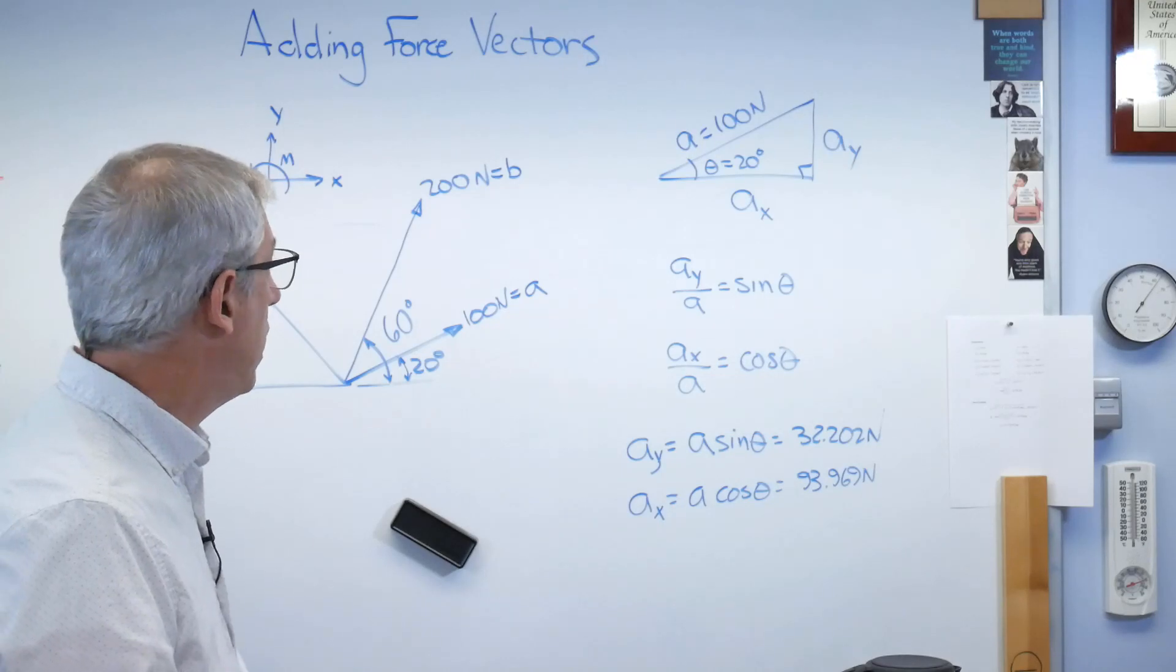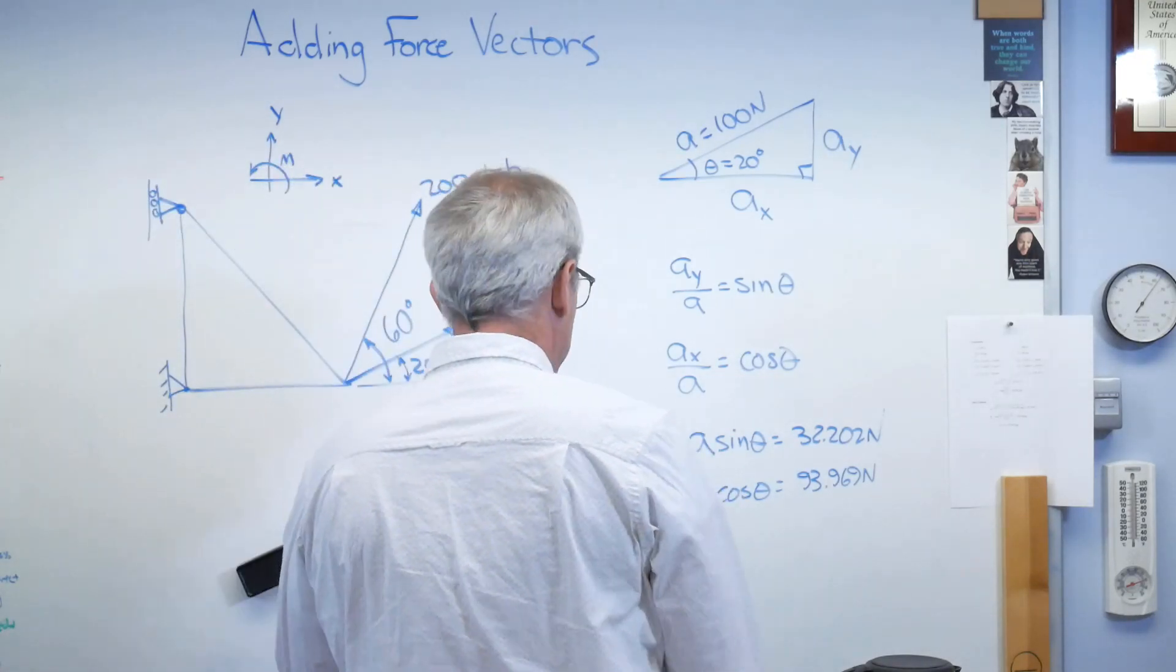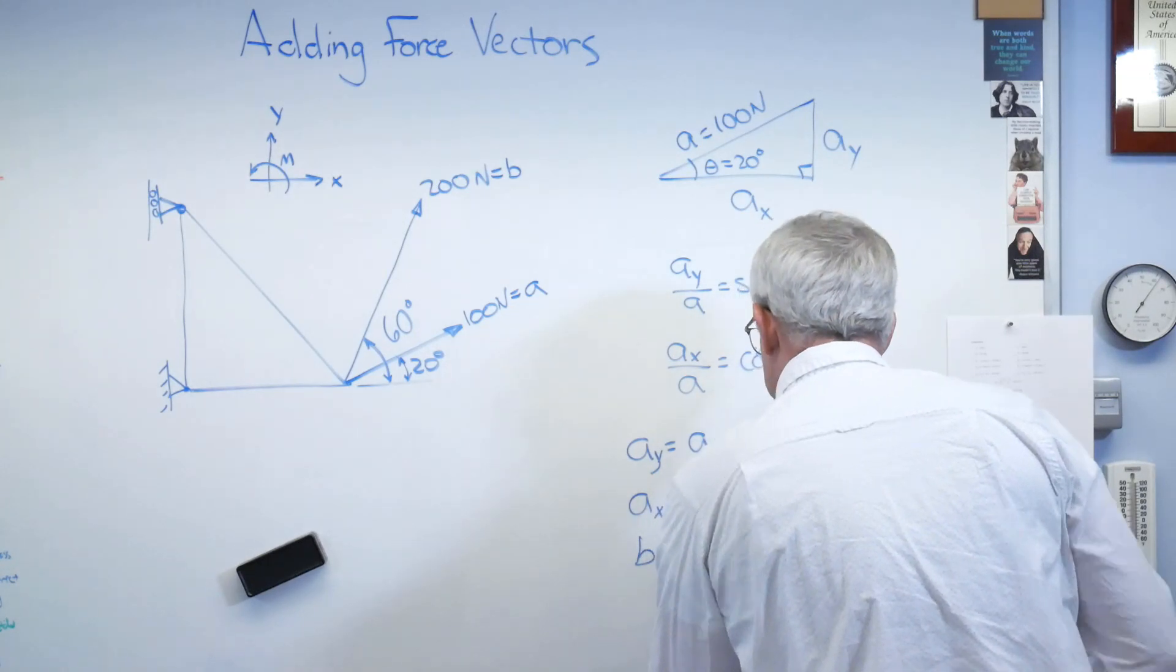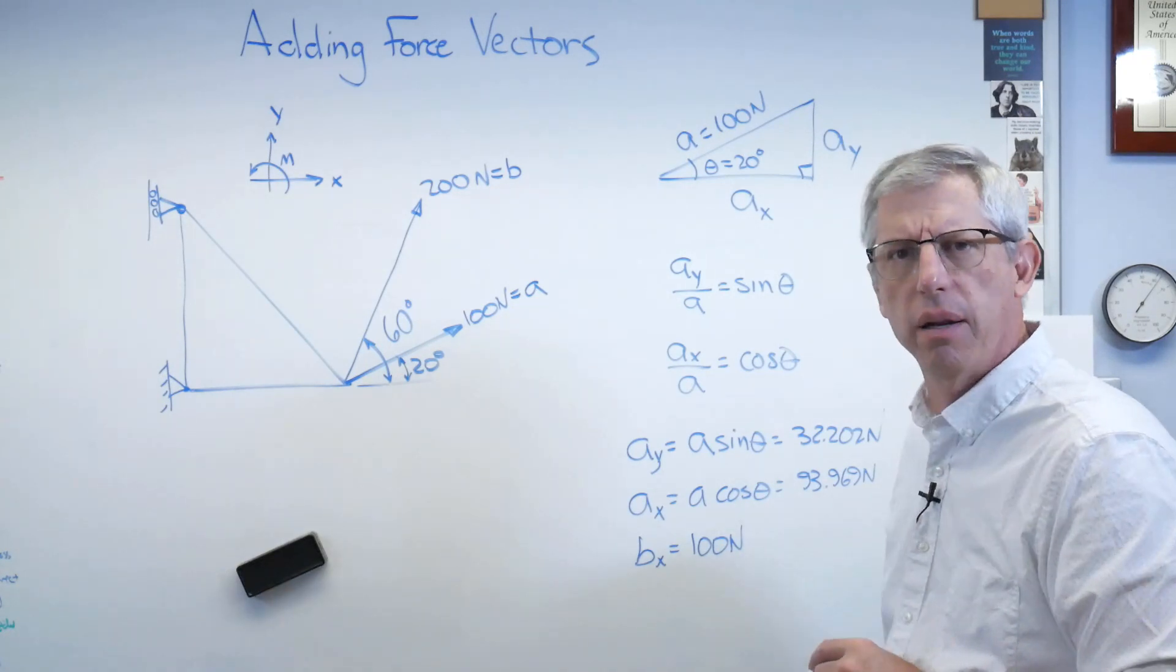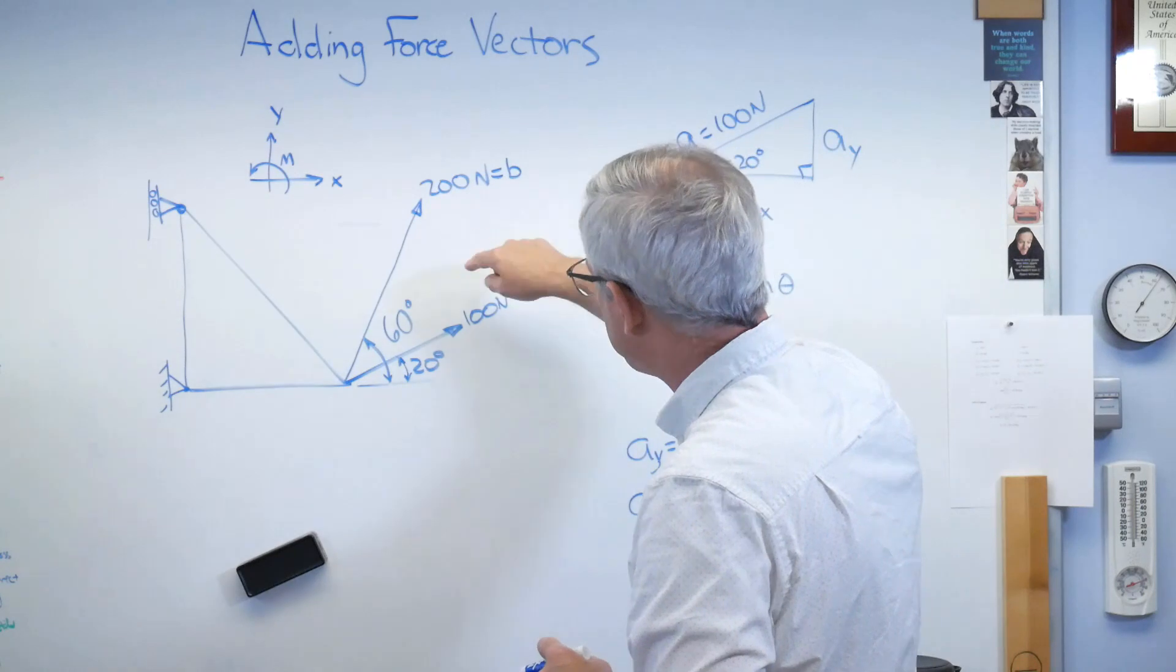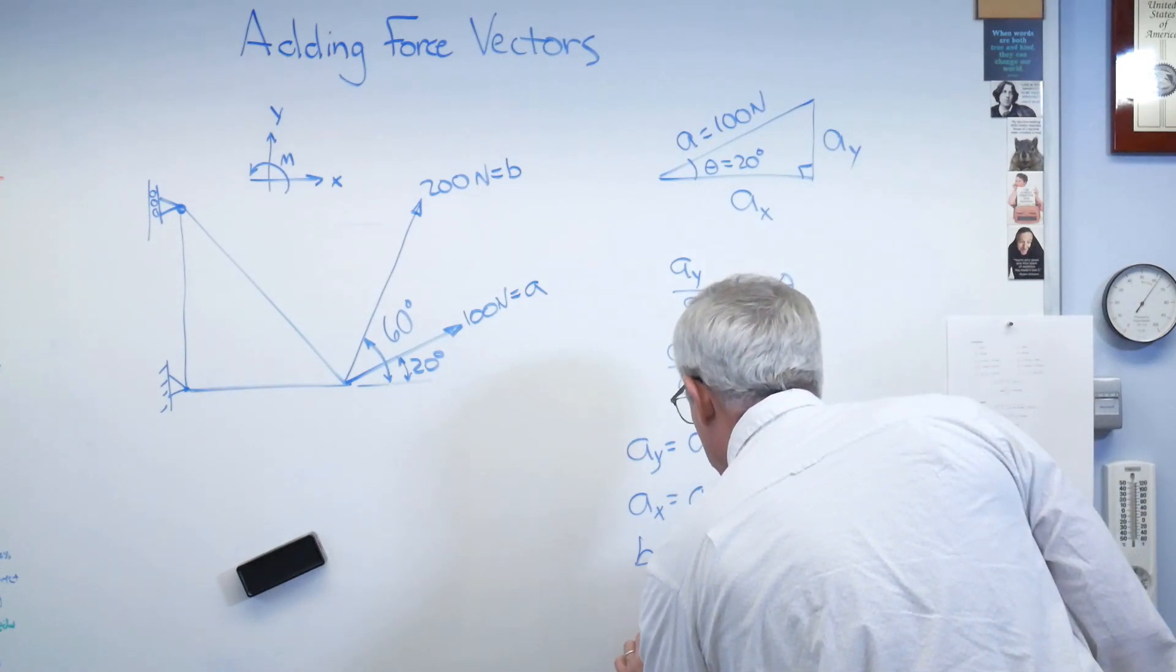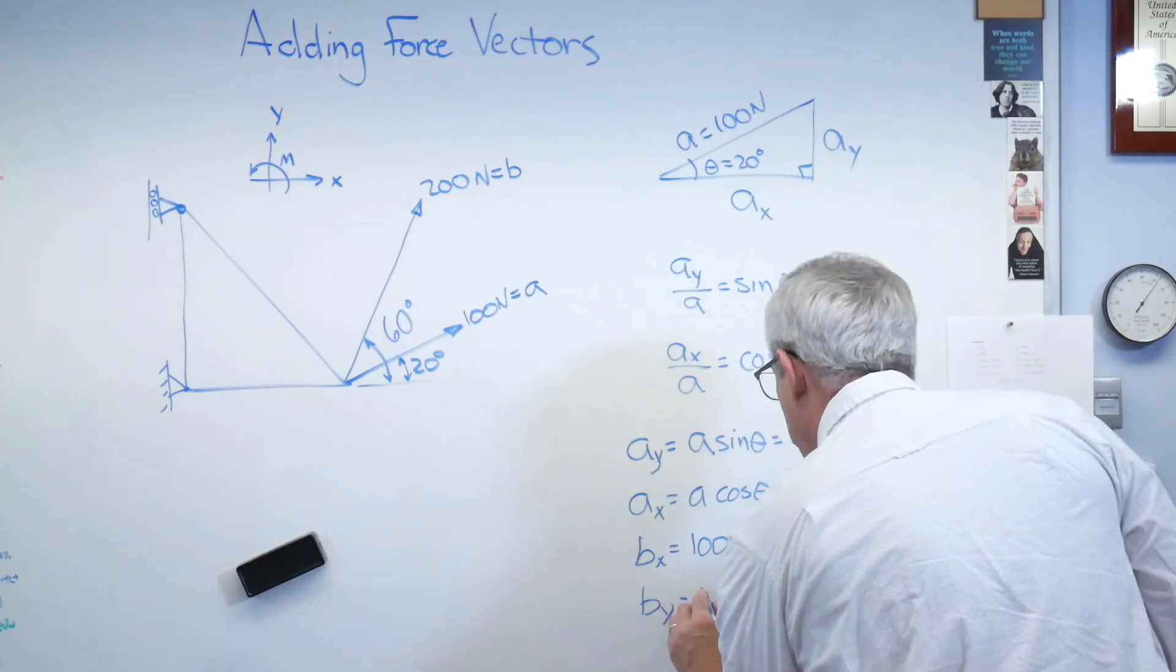I'm going to need Bx and By, and using the same kind of logic, Bx is going to be 100 newtons. A little suspicious that comes out to be a round number, right? That doesn't usually happen. Well, the reason it's happening here is that the cosine of 60 is a half, and a half of that is 200, and I think we can just fit this on the screen here. So By is 173.205.